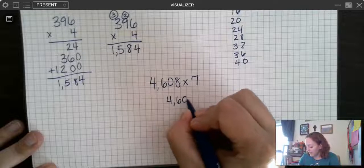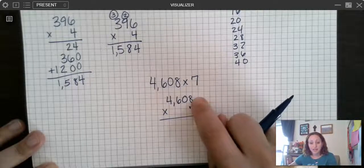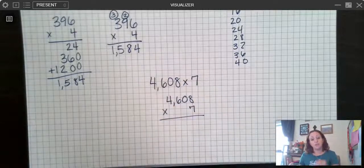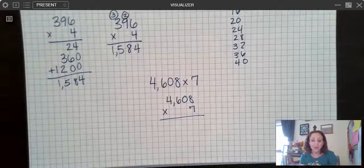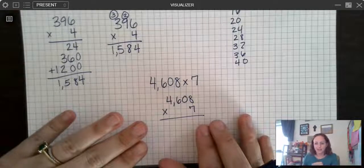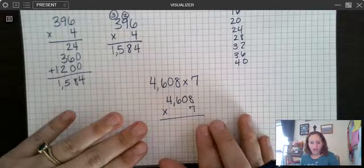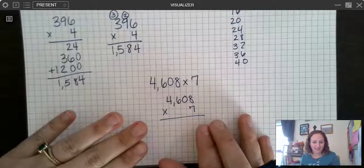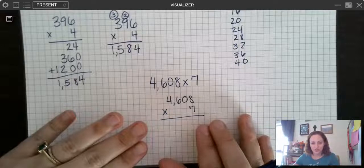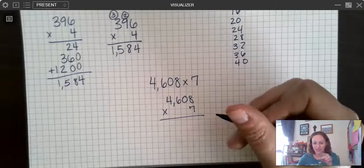So we have 4,608 times seven. Remember with the standard algorithm, I'm multiplying the number on the bottom times the number on the top. And I have to go in backwards place value order. So from the ones place this time up to the thousands place. And I'm going to regroup each time and add in what I'm regrouping. So one thing that can be confusing about this is you're multiplying and then adding, multiplying and then adding, multiplying and then adding. Whereas with the partial products, you just multiply and then you add.